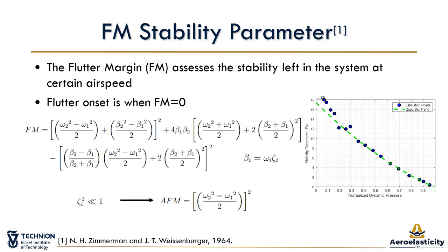FM is a quadratic function of the dynamic pressure that goes to zero at the flutter onset. Based on the calculated FM values at pre-flutter conditions, the FM parameter can be fitted with a quadratic curve, which is extrapolated to FM equals zero to yield the estimated flutter onset.